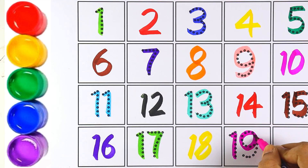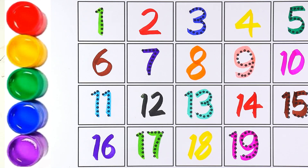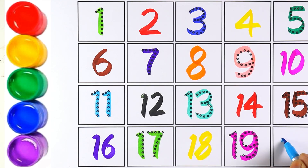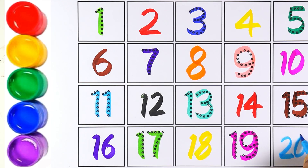One and nine makes the number 19. Now for the last number, I'm using sky blue color — two and zero makes the number 20. Now let's start counting from 1 to 20: 1, 2, 3, 4...